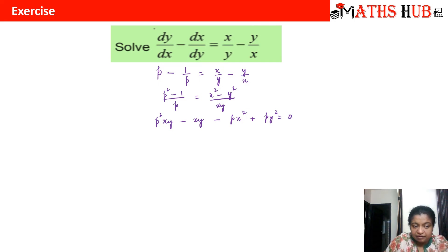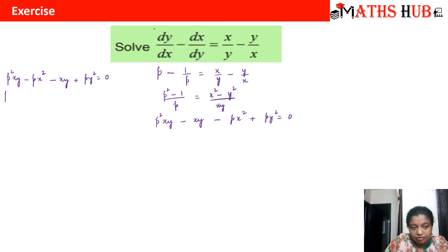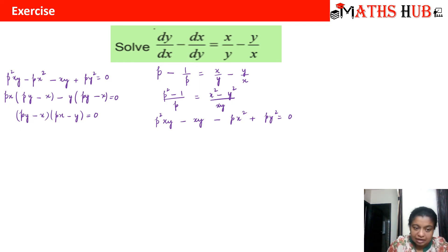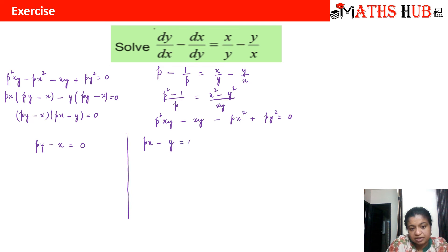Now we need to make pairs. Grouping: (P²·xy − P·x²) + (P·y² − xy) = 0. Taking Px common from the first pair gives Px(Py − x), and taking y common from the second pair gives y(Py − x). So we get (Py − x)(Px − y) = 0, giving us two linear factors in P. Setting each factor equal to zero: Py − x = 0 and Px − y = 0.